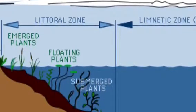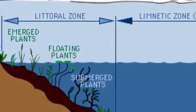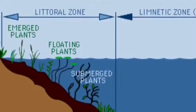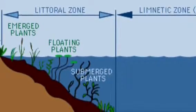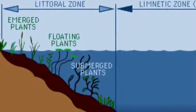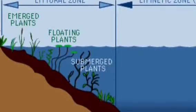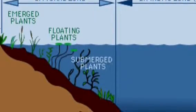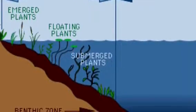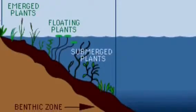The sunlight reaches the bottom; this allows aquatic plants to grow. The benthic zone is the lowest level of a body of water. The limnetic zone is the well-lit open surface water away from the shore.